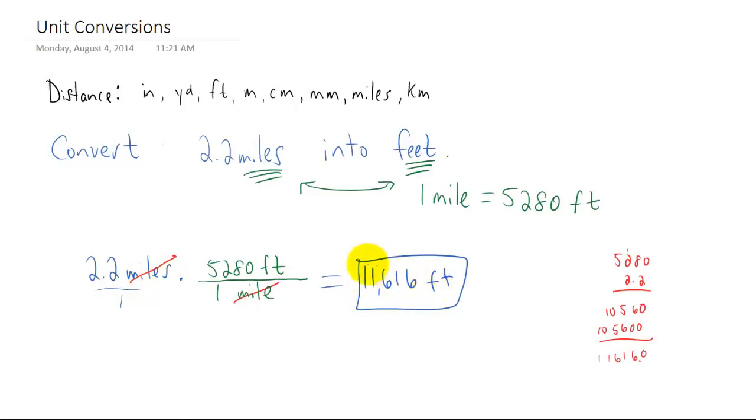Now a question you might be asking is, why are we allowed to do this? Why can we just take our 2.2 miles and multiply it by 5280 to get an answer? Usually in math we're not allowed to just multiply randomly by numbers. Well the reason we're allowed to multiply by this thing in green right here is because 5280 feet is the exact same thing as 1 mile. So when you put it into a fraction like this, this fraction has a value of just 1.